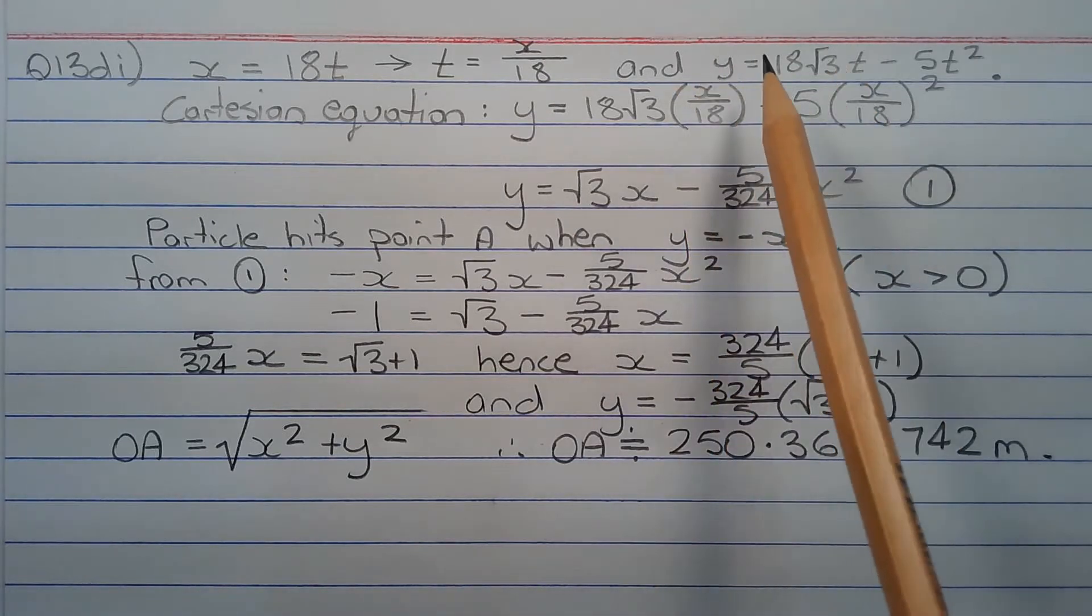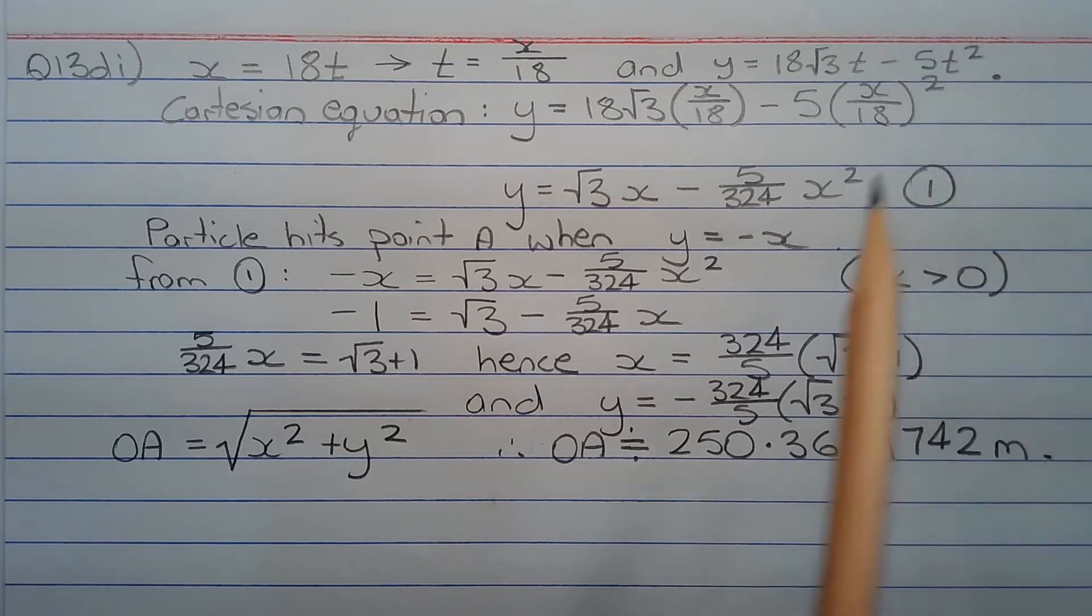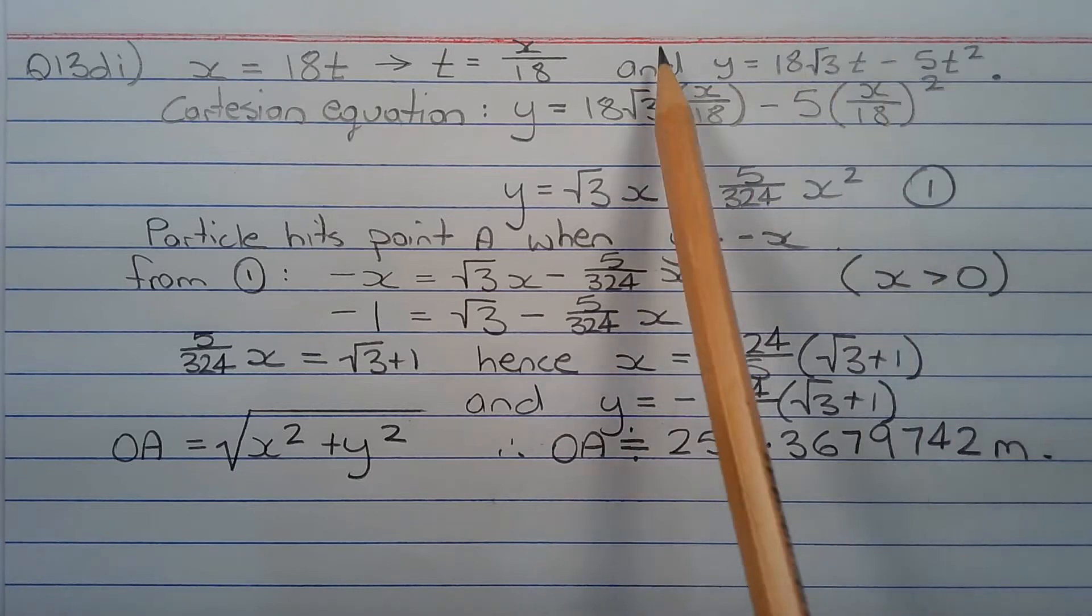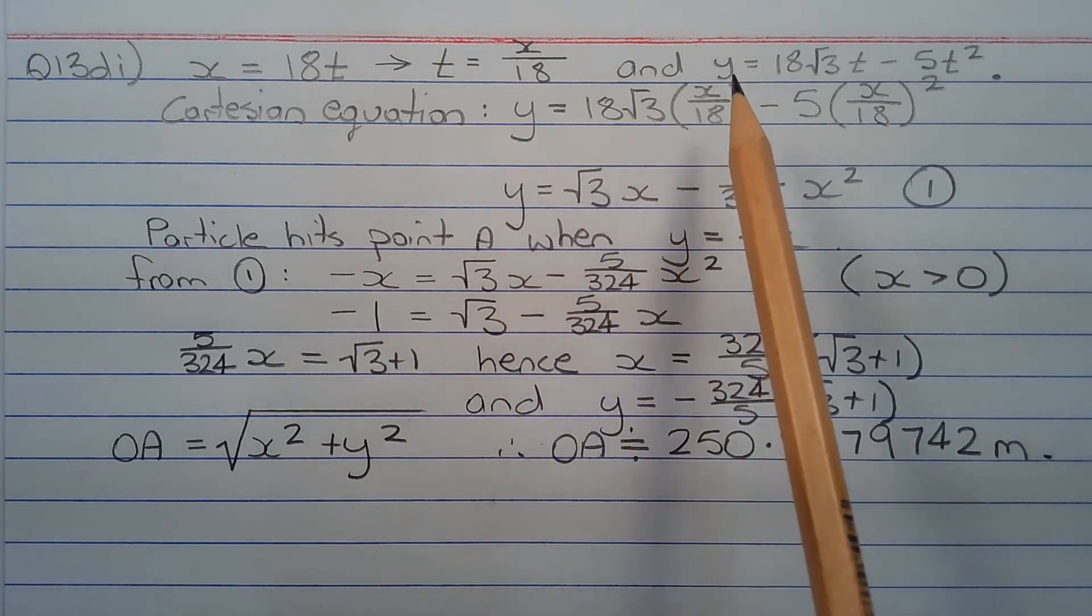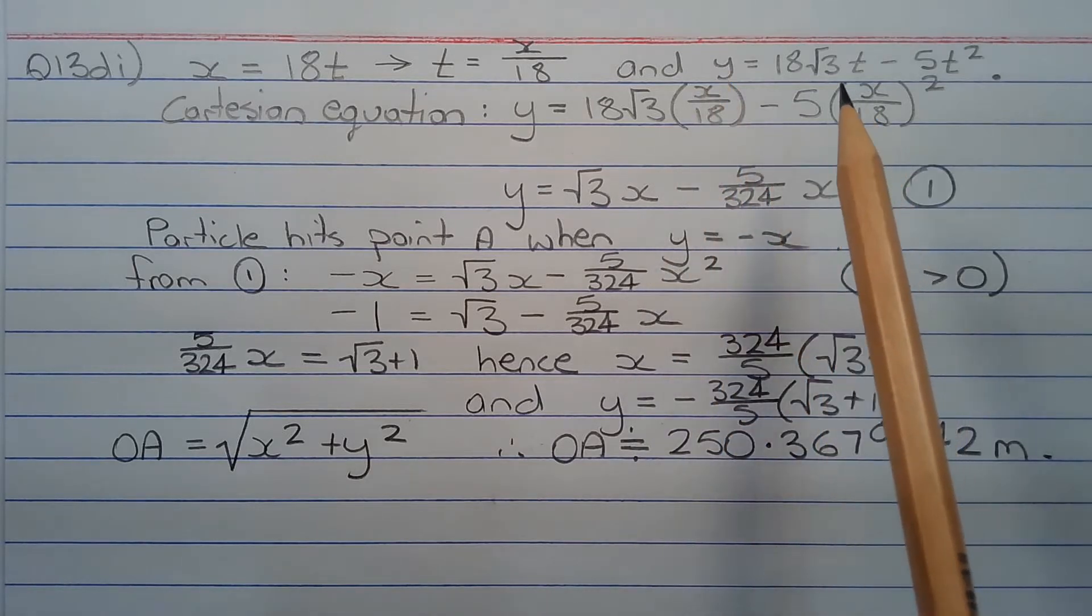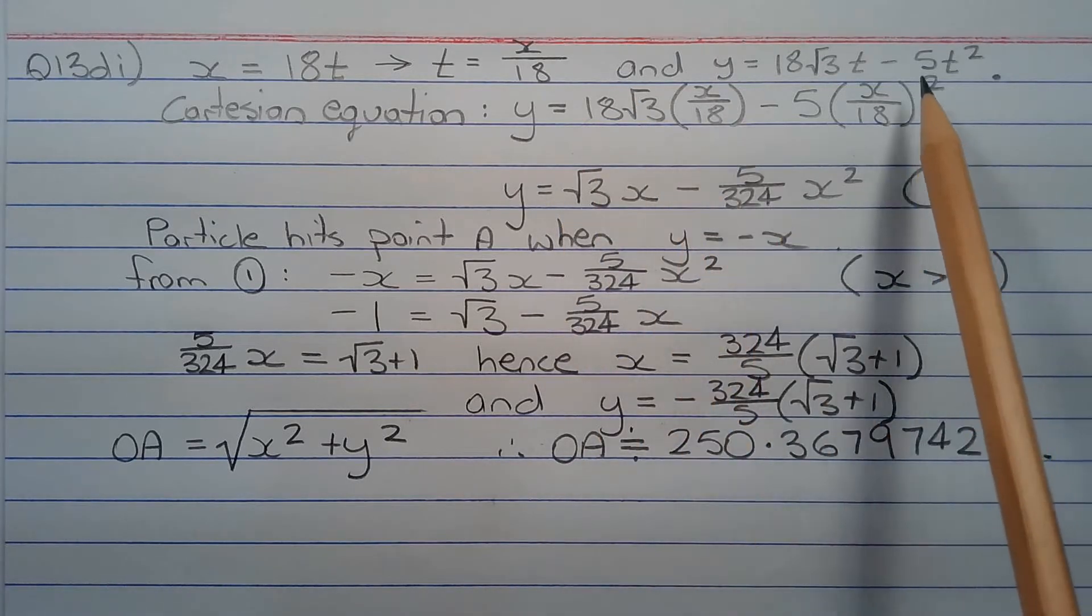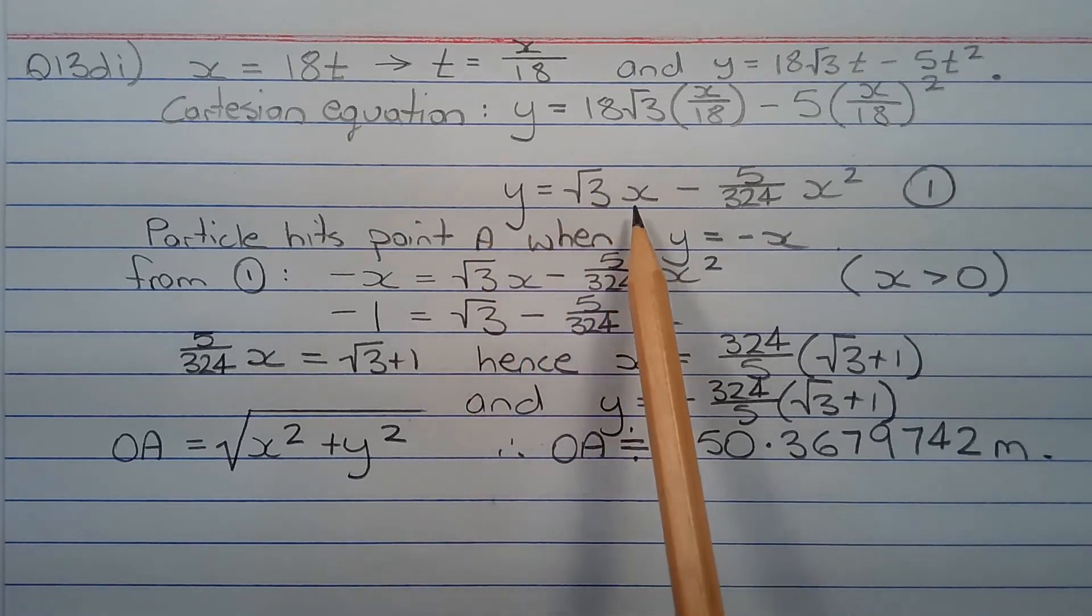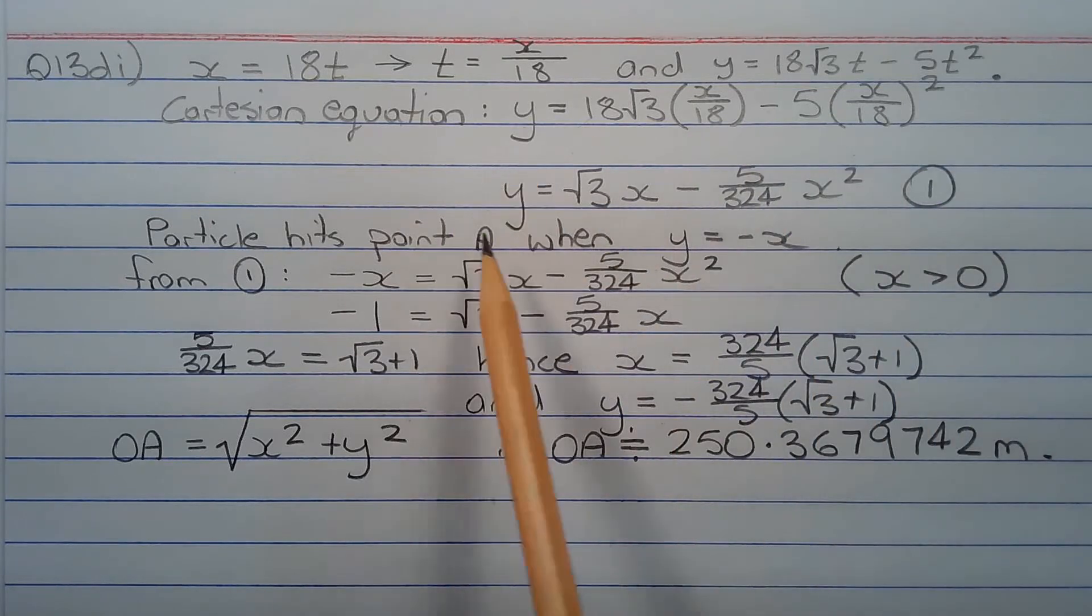Now the equation for y in terms of t is y equals 18 root 3 times t minus 5t squared. So I'm going to substitute x over 18 for t in the equation for y. So the Cartesian equation becomes y equals 18 root 3 times x over 18 minus 5 times x over 18 squared. Now this 18 will cancel with this 18 here. And expanding the brackets, we get y equals root 3 times x minus 5 over 324 times x squared. I'm going to call this equation number one.